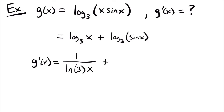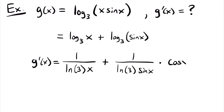Then we add that to the derivative of log base 3 of sin x, which requires the chain rule. We start by having 1 divided by the natural log of the base 3, then multiply by the function inside the log function — so we have sin x — and then multiply by the derivative of that inside function. The derivative of sin is cosine, so we multiply by cosine x. In this term, we have cosine in the numerator and sine in the denominator, and from our trigonometric identities, cosine divided by sine is equal to cotangent.